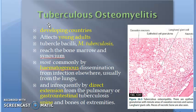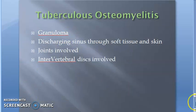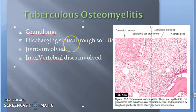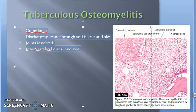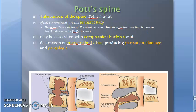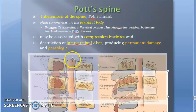Revision: Tuberculosis osteomyelitis is seen in developing countries and young adults, caused by Mycobacterium tuberculosis. The bacteria reach the bone marrow and synovium via hematogenous spread from the lungs or by direct extension from gastrointestinal tuberculosis. The spine and bones of extremities are affected. If the spine is affected it is called Pott's disease. Histology shows granuloma. There can be discharging sinus, joint involvement, and intervertebral disc involvement. Pott's spine commences in the vertebral body with compression fracture, disc destruction, permanent damage, and paraplegia.